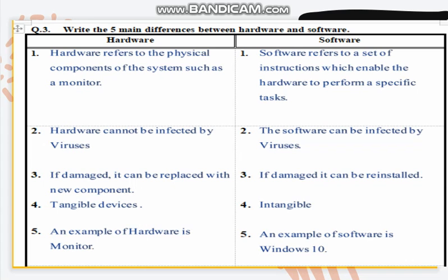Our first difference: hardware refers to the physical components of the system, such as a monitor. Physical components are those that can be touched. While software refers to the set of instructions which enables the hardware to perform a specific task — software tells the computer hardware what to do.